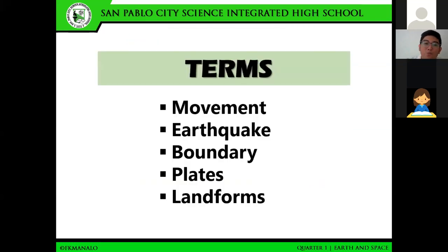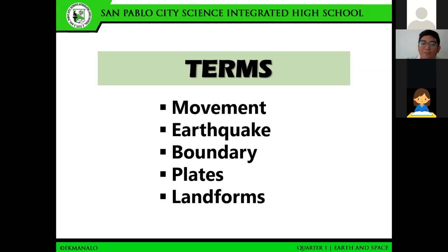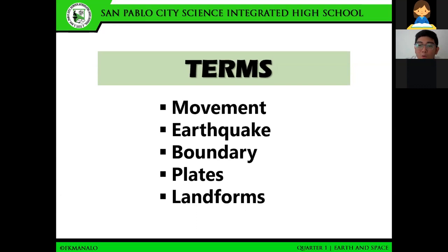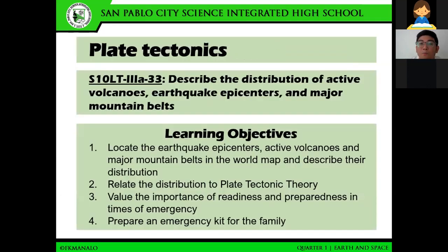So let's have a summary of the terms we obtained: movement, earthquake, boundary, plates, and landforms. On your own words, how would you associate or connect these terms? How would you relate movement with earthquake, boundary, plates, and landforms? Jeff, would you like to answer? Sir, earthquake — if I remember correctly, it's defined as the movement of the crust or the earth below. Yes, correct. So we can associate this to plate tectonics, which is part of the lesson today.